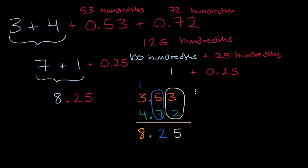Hopefully it makes sense what's actually going on. You're adding hundredths to hundredths, tenths to tenths, ones to ones. And when you add tenths to tenths and get something larger than one, the whole-number part goes into the ones place. We'll get much more practice with this in future videos.